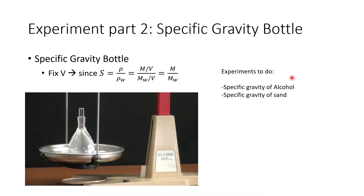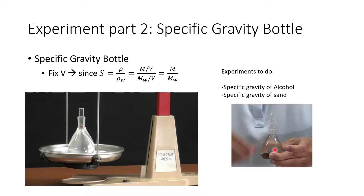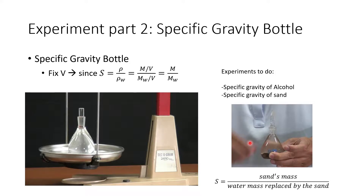The experiment requires finding the specific gravity of alcohol and the specific gravity of sand. The sand part is more complicated because you can't fully fill sand into the specific gravity bottle. What you do is fill sand about one-third of the flask, then fill the rest with water. Measure the mass of sand inside the bottle first, then fill with water. You can find the amount of water filled in and determine how much water mass is being replaced by the sand. Using the same principle, the volume of water replaced by the sand is fixed, so S equals the sand's mass divided by the water mass replaced by the sand.